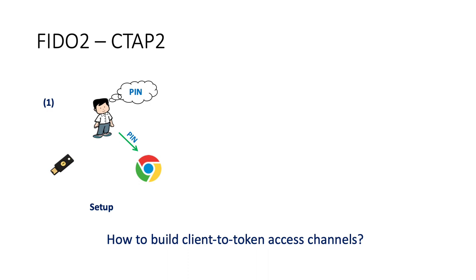Now let's see how CTAP2 builds such channels. It has three phases. In the first phase, setup, the token is brand new and the user wants to set it up for his own use. He first creates a secret user-memorizable PIN code and embeds it into the token through the client. He types in the PIN to the client; then the token and client run a Diffie-Hellman key exchange to share some secret key. With the shared key, the client encrypts the user PIN with a deterministic encryption scheme called CPC0 — this is AES in CBC mode with a zero IV. The client sends the ciphertext to the token. In addition, the client also computes an HMAC on the ciphertext and sends that to the token. Note that encryption and MAC use the same key, which is not considered good practice. In our proof, we model the HMAC as a random oracle. Finally, the token decrypts the ciphertext to get the user PIN and stores the hash of it.